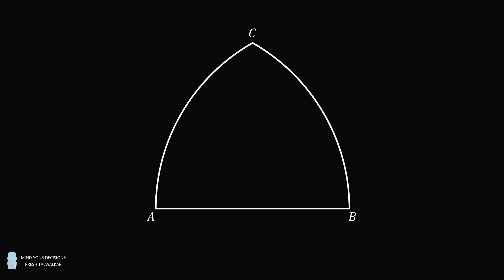Hey, this is Presh Talwalkar. Here's a really nice geometry problem. Start with the line segment AB. Construct the arc BC centered at A, and construct the arc AC centered at B.